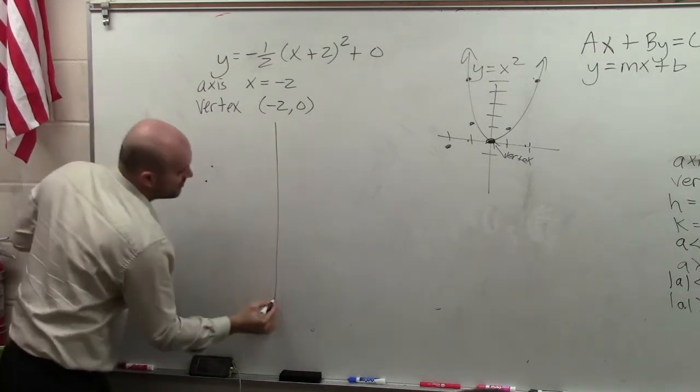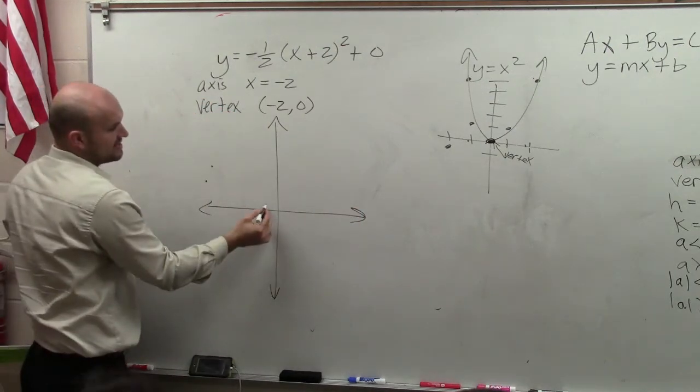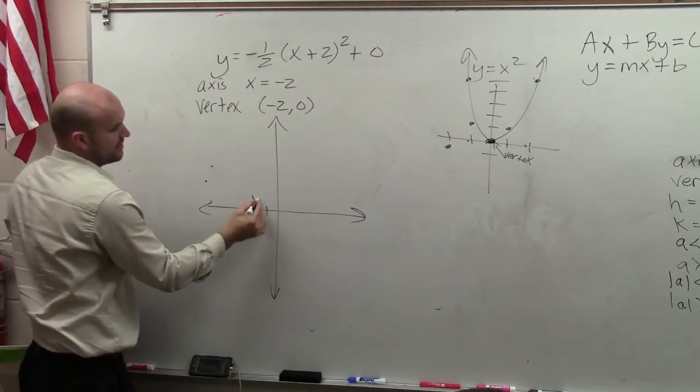So now, once we know our vertex and our axis of symmetry, let's go ahead and plot it. So that's negative 2, 0 right there. There's my vertex.